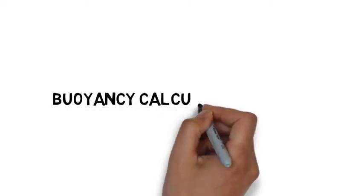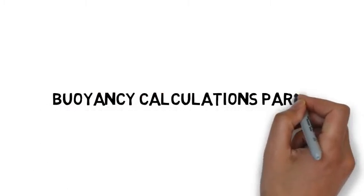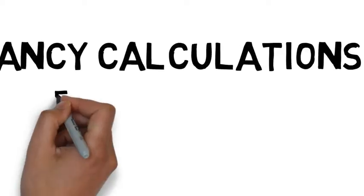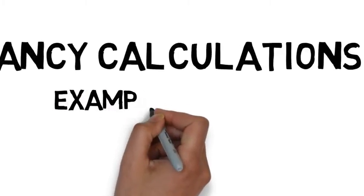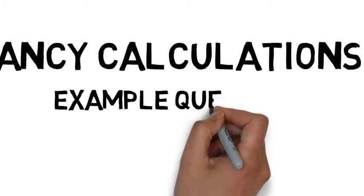So this is buoyancy calculations part one. These are calculating an object's buoyancy, whether it would be positively buoyant, neutrally buoyant or negatively buoyant.